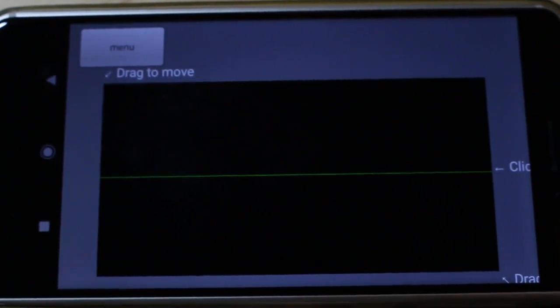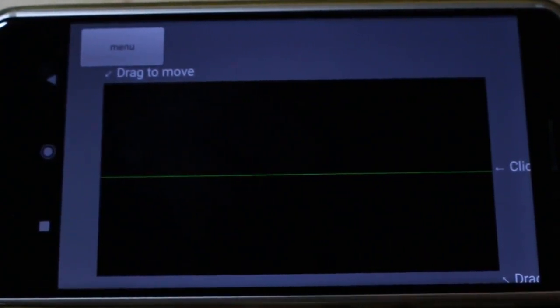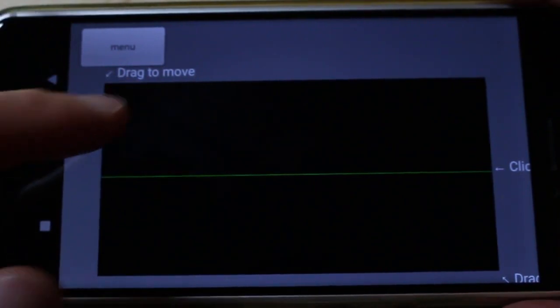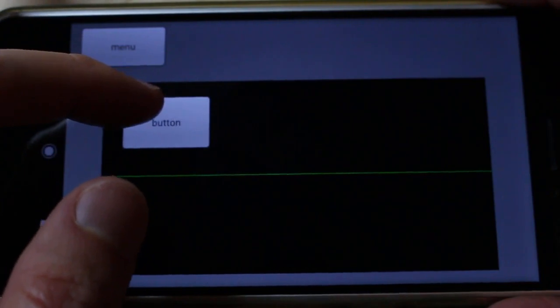But why would I need that lock function in the first place? Imagine I have this plot here, and I want to add a button on top of it. So I add a button and move it on top of it.